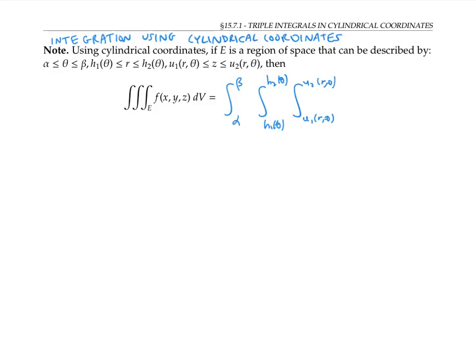Of course, we have to convert our function into cylindrical coordinates. We can do that by substituting in r cos(θ) for x, r sin(θ) for y, and z just stays as z.